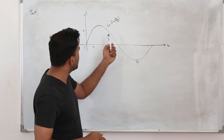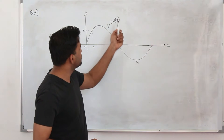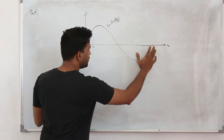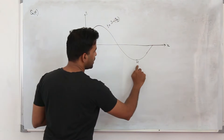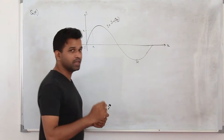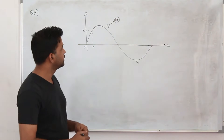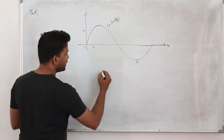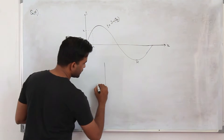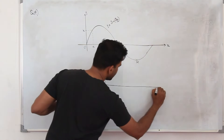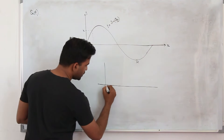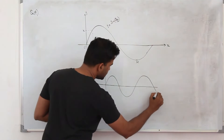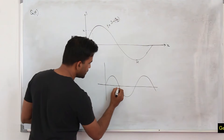We are given the graph y equals sin(x/12). They want you to find the period of this graph and the coordinates of the minimum point. If we take the basic graph sin x, sin x starts from 0. This is our sin x graph.